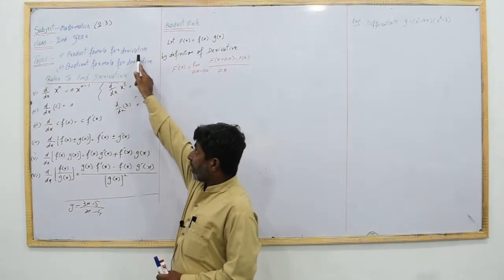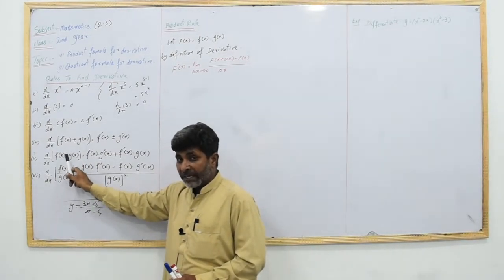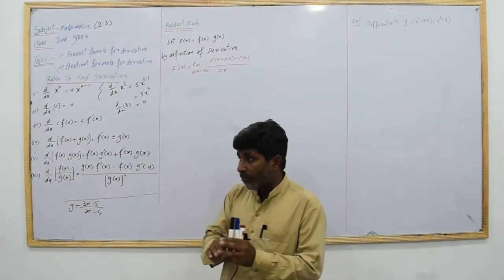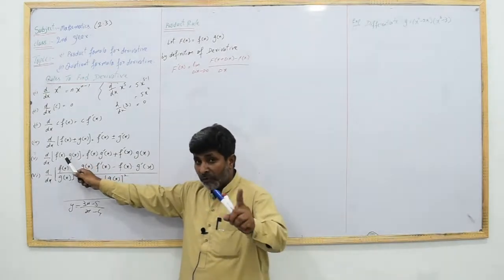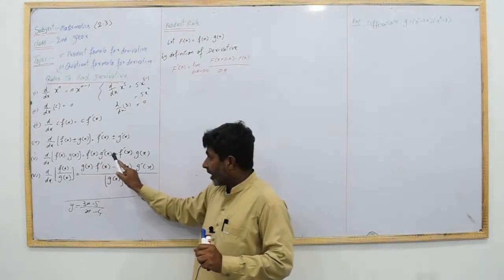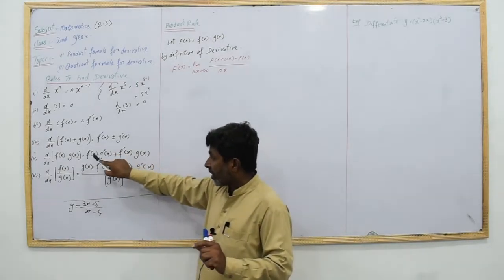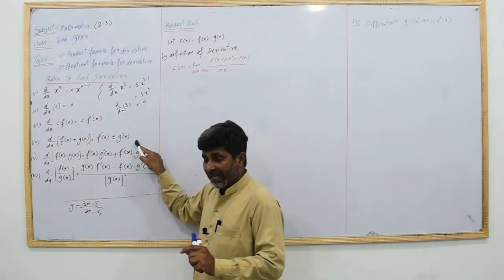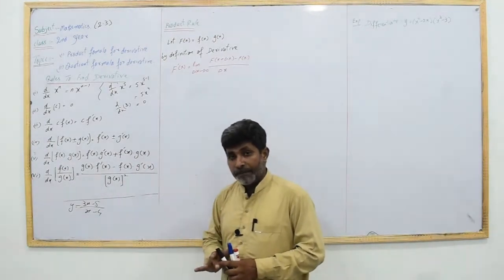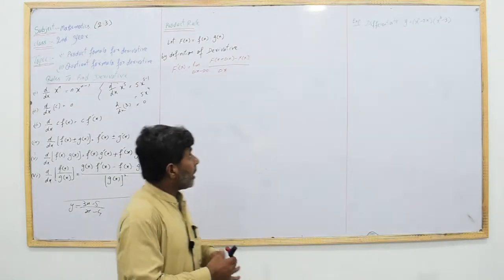Next, we will cover the product formula for derivative. When two functions f(x) and g(x) are multiplied together, we need a special formula to find the derivative. The formula states: the first function times the derivative of the second, plus the second function times the derivative of the first. We will now prove this formula. Similarly, we will also prove the quotient formula.